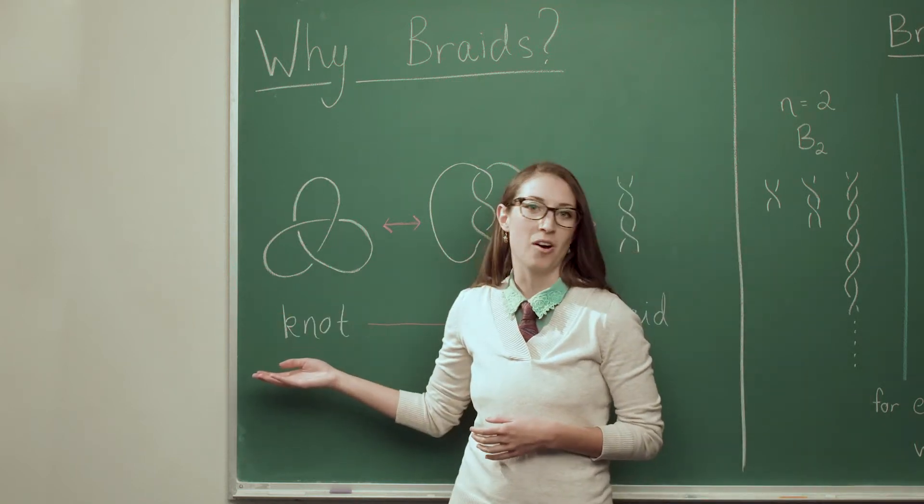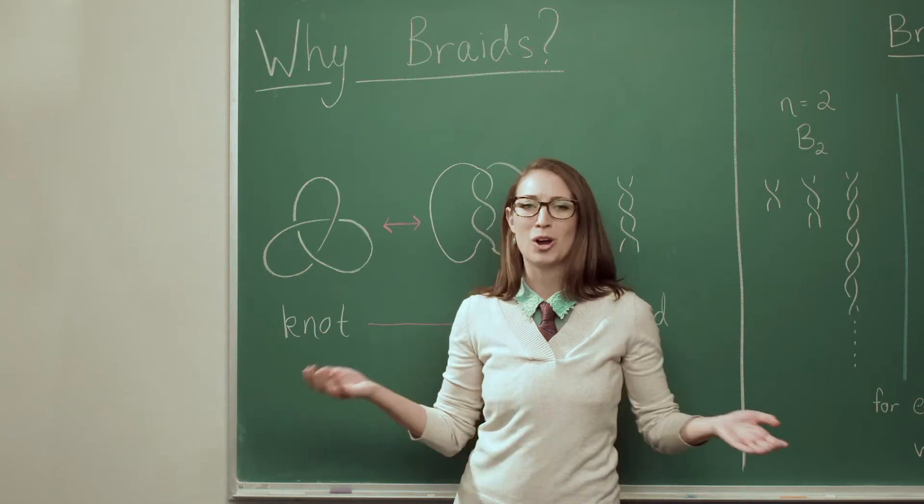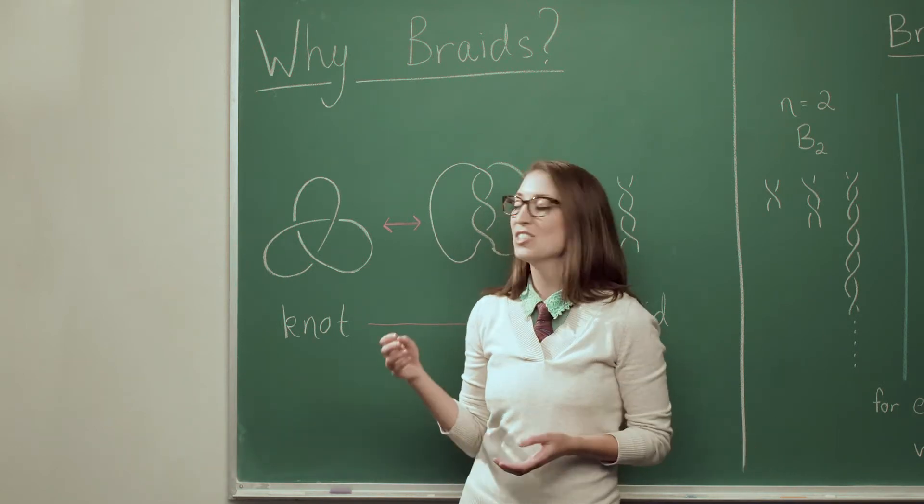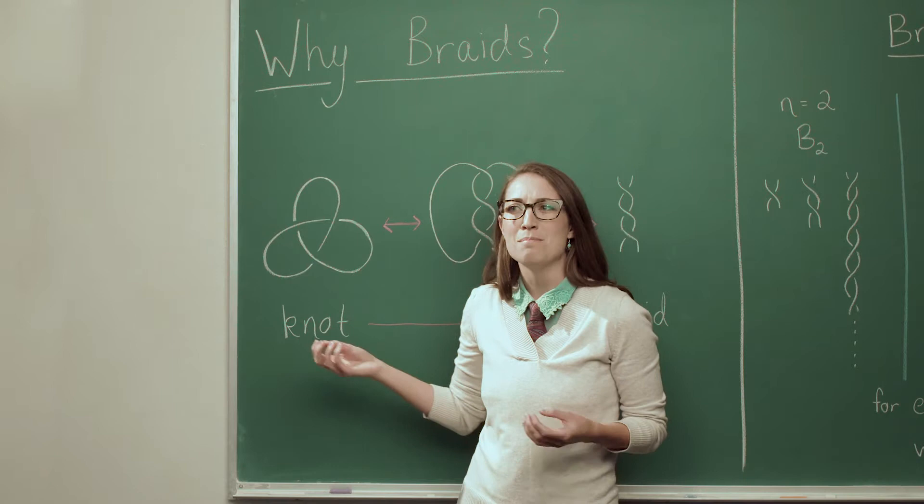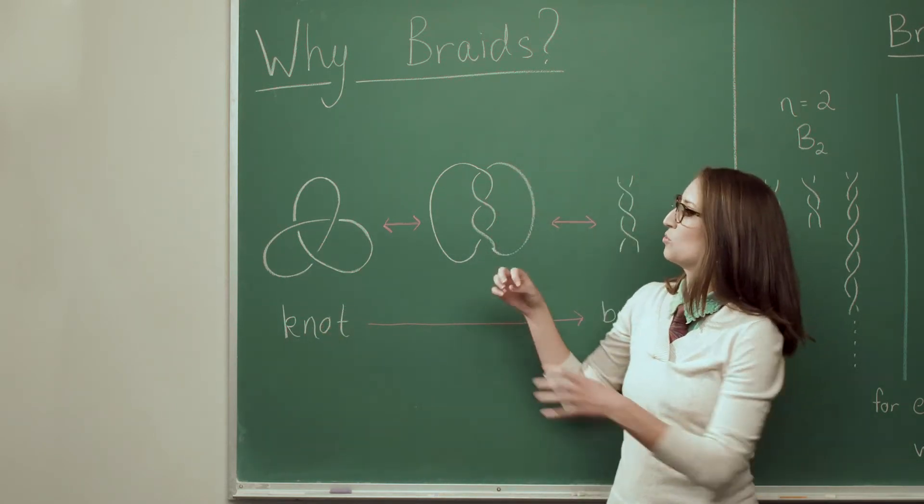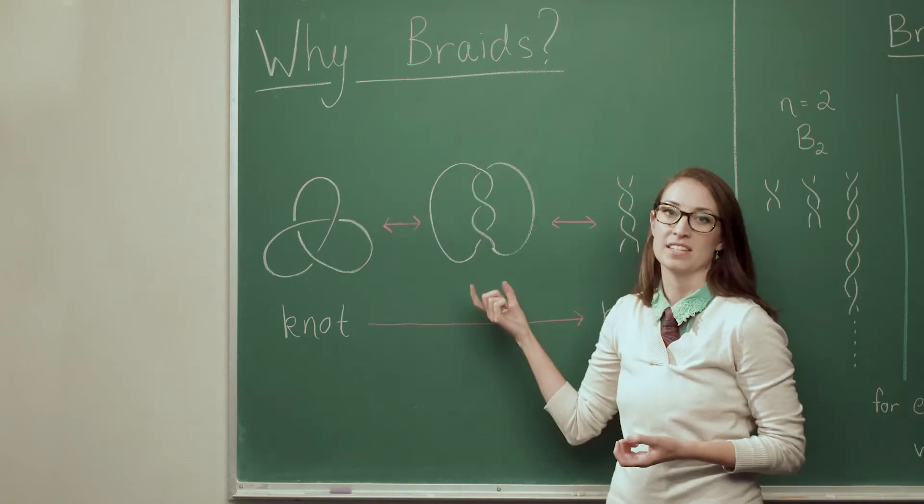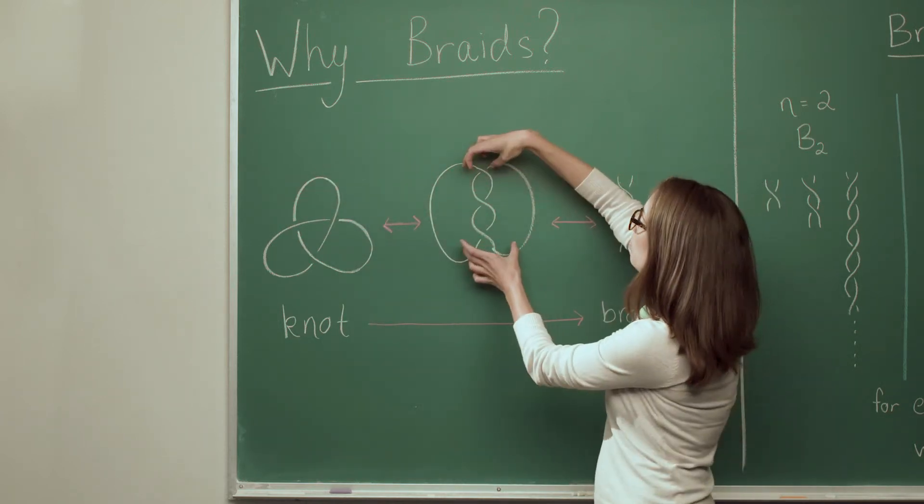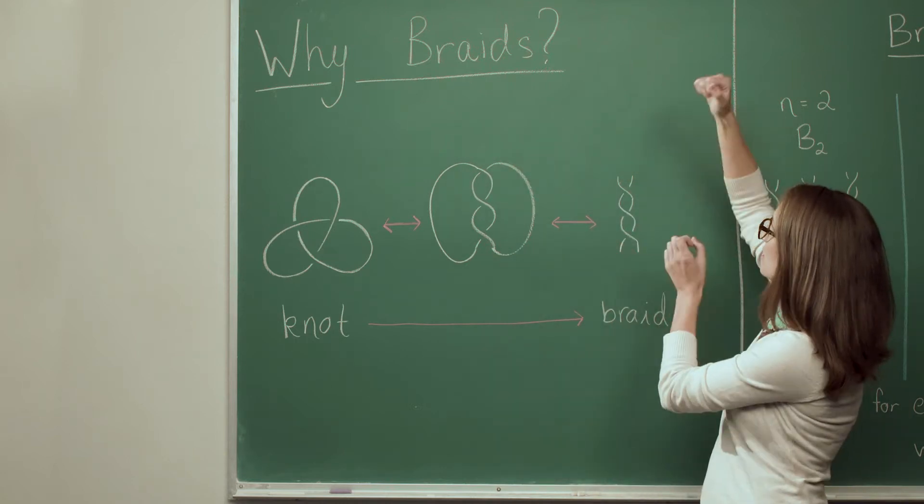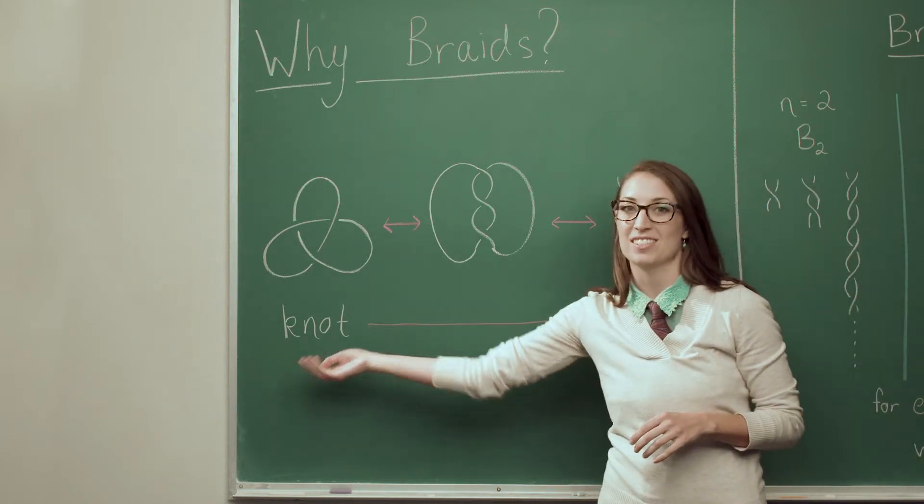So knots happen all over the place. You see them in your pocket when your headphones get tangled up, you see them on artwork all around the world, and so we want to study knots and what makes things get tangled up. So one thing we can do is rearrange the strands of the knot so that we organize the crossing information, and then pull just the crosses out and what we have left is a braid. And now we can study braids instead of the knots.